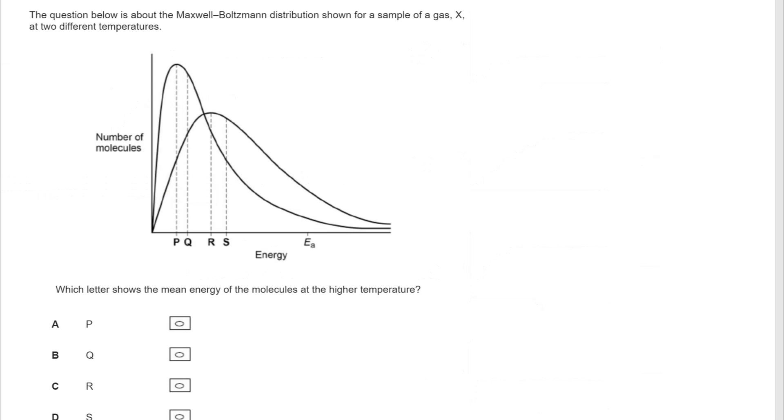And this is a combination of the first two questions, really. So hopefully you've identified some of the key ideas that are needed. Recognising that the higher temperature is the one on the right. Now that means we can dismiss P and Q. Our answer is going to be R or S. And we want the mean energy.